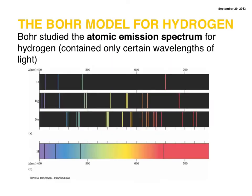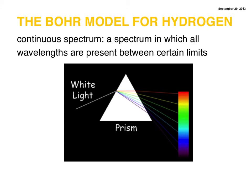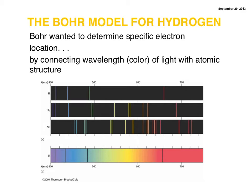Bohr wanted to know about the location of electrons within atoms. So he studied hydrogen, which has only one electron per atom. And he looked at the atomic emission spectrum for hydrogen, shown below. An atomic emission spectrum is generated for an element and it contains only certain wavelengths of light. Bohr wanted to make a connection between these wavelengths and electron location. An atomic emission spectrum is not a continuous spectrum — it doesn't contain all wavelengths, like a continuous spectrum for visible light does, shown here. So Bohr wanted to figure out what these different wavelengths of light had to do with electrons and their locations within hydrogen atoms.